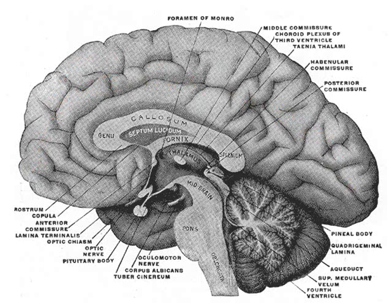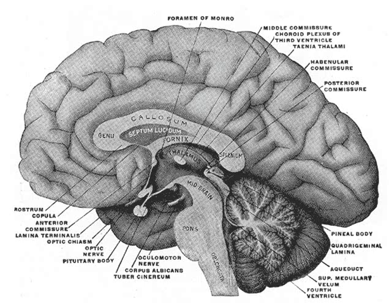Another peculiar region is the diencephalon, which, depending on which textbook you read, is either classified as part of the brainstem, or in older textbooks as part of the cerebrum, or some people classify it as a separate region because there are unique functions that make it a halfway state between brainstem and cerebrum. For the sake of this lecture, I'm going to consider it to be a separate part of the brain.